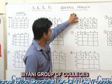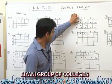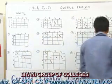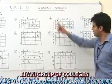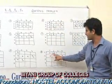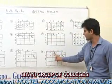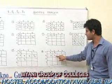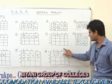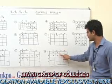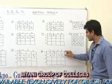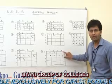So we backtrack further and place Q1 at column 2. Now Q2 is to be placed in row 2. Column 1 is not valid because Q1 and Q2 are on the same diagonal. Column 2 is not valid because they are in the same column. Column 3 is not valid because Q1 and Q2 are on the same diagonal. Column 4 is valid, so we place Q2 in column 4.